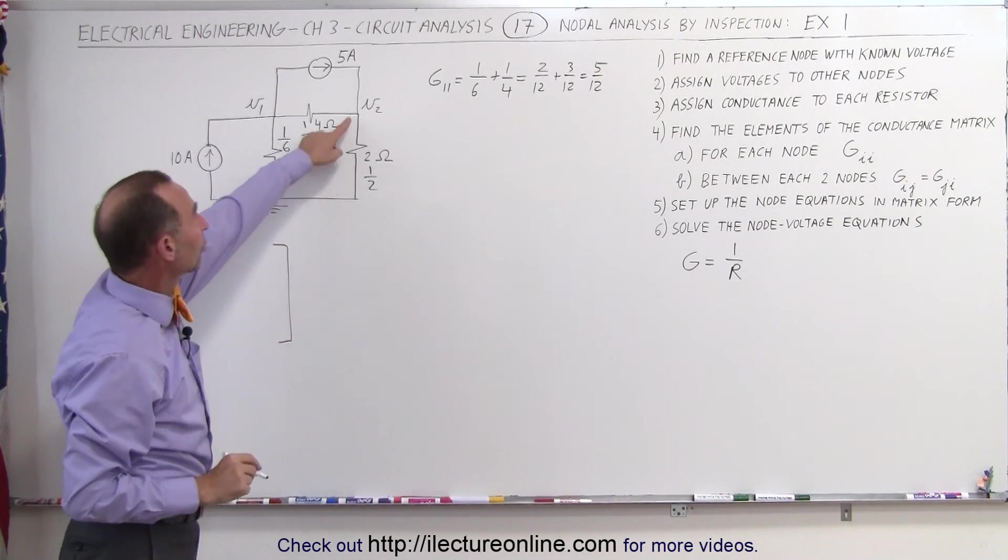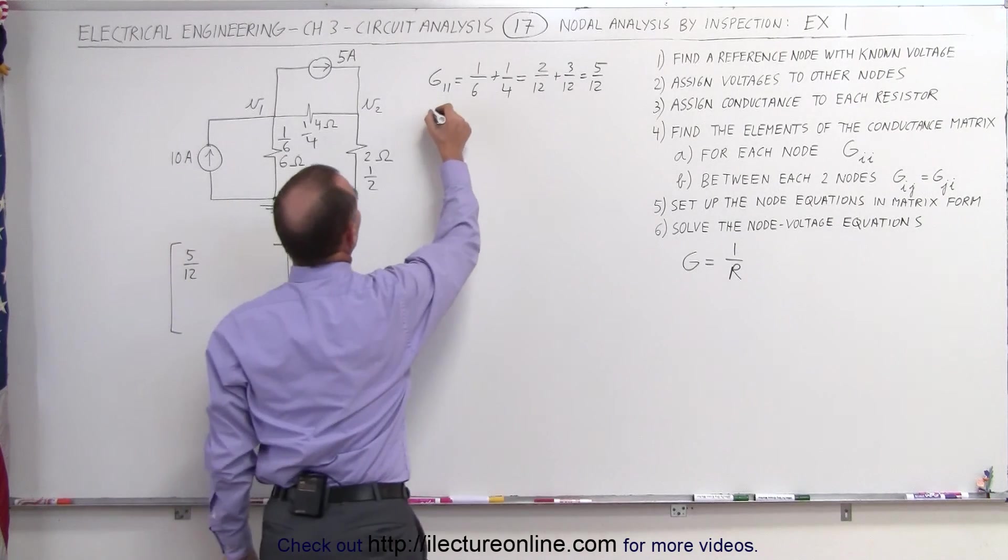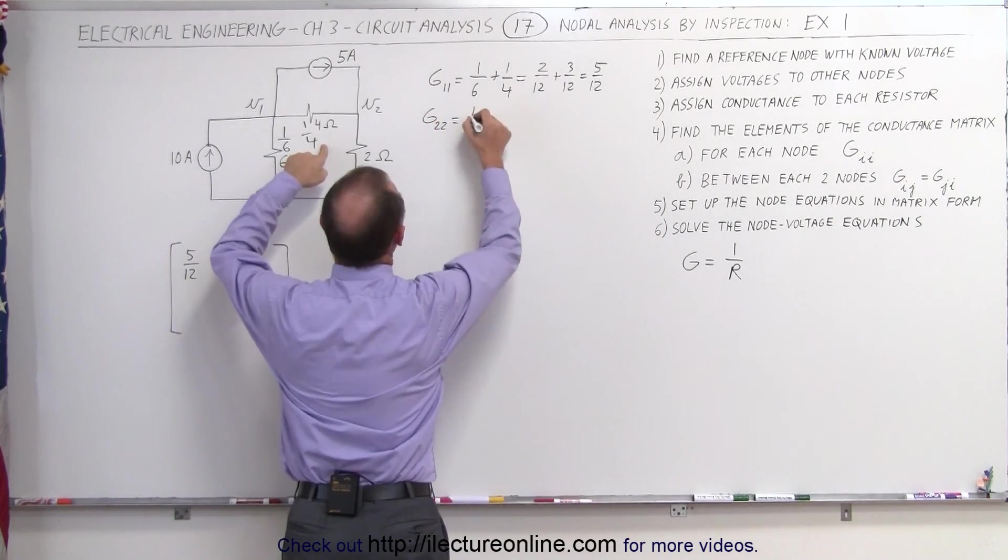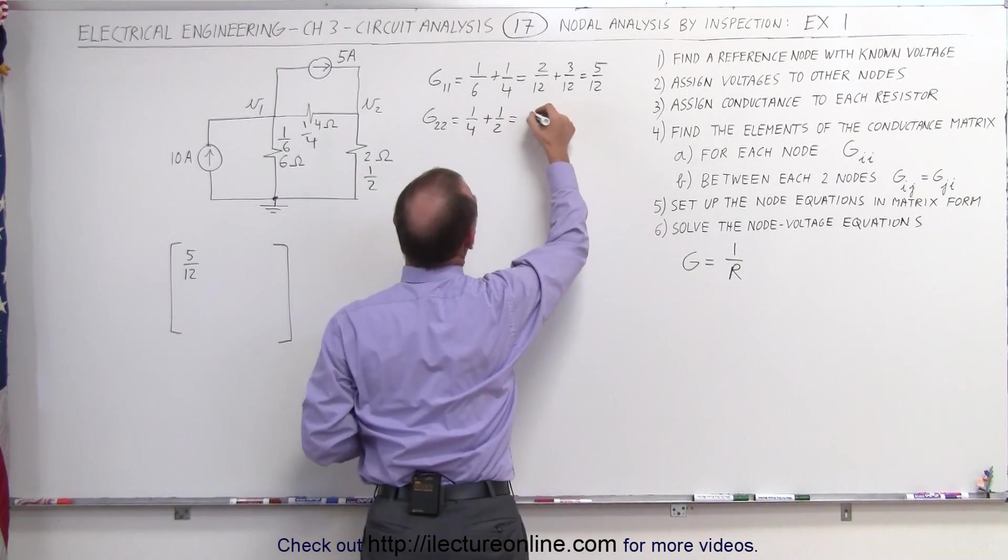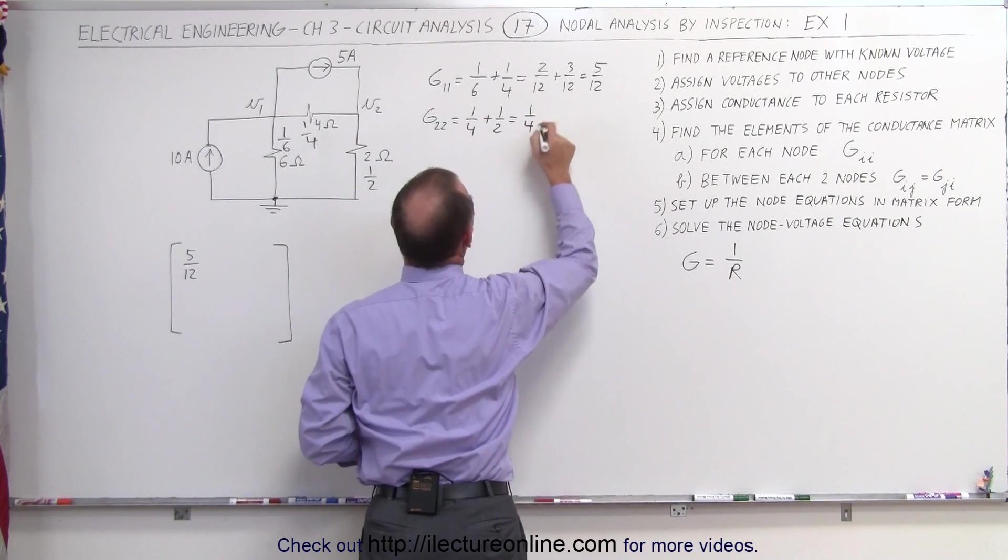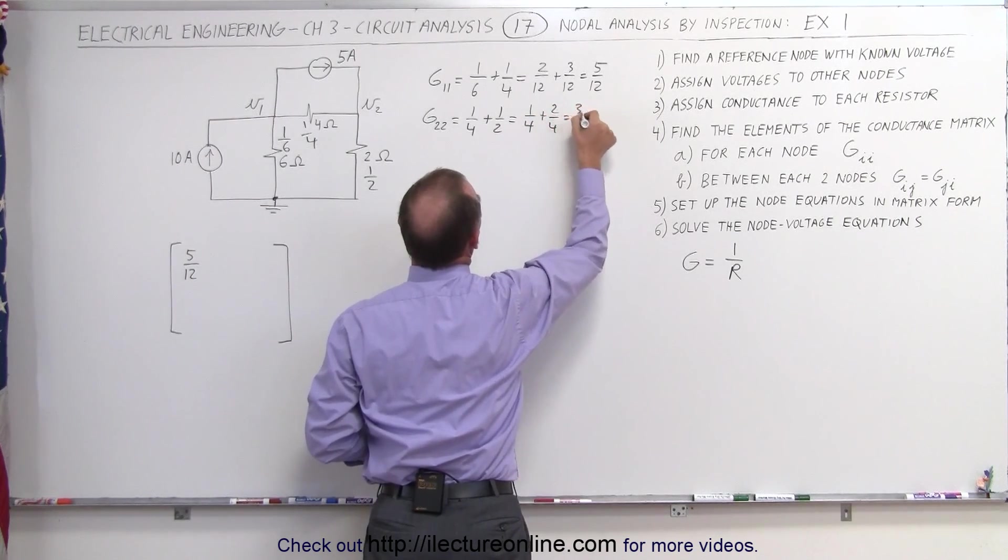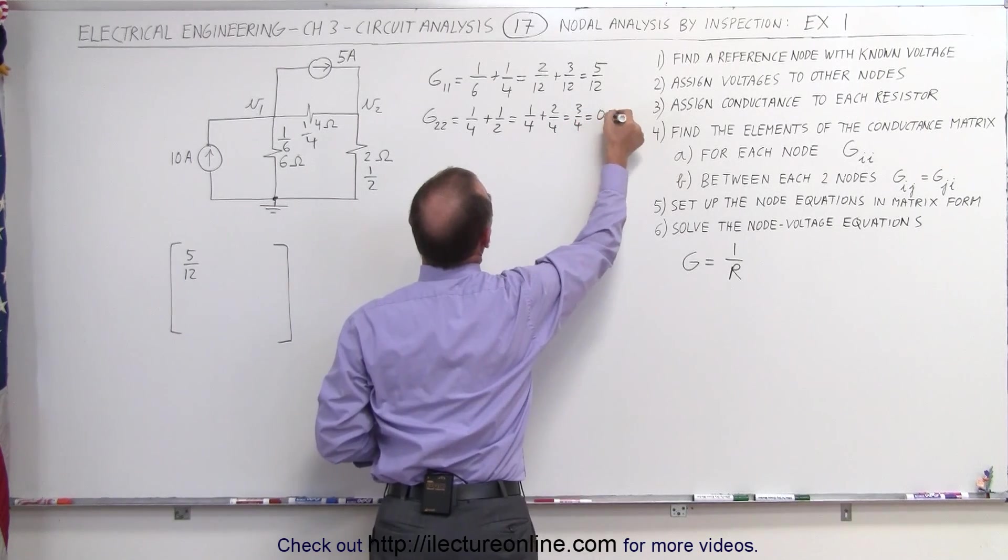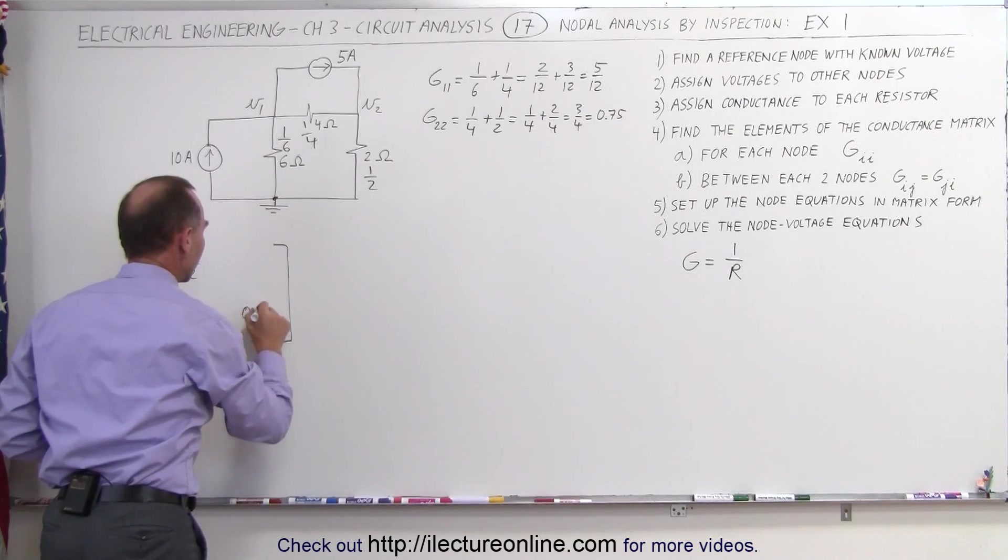The next we want to have all the conductances that are directly connected to V2 added. This gives us G22, and that would be 1/4 plus 1/2, which is equal to, common denominator is 4, 1/4 plus 2/4, which is equal to 3/4, 3/4, which is equal to 0.75, and that would be the value of the element here. So those are the diagonal elements.